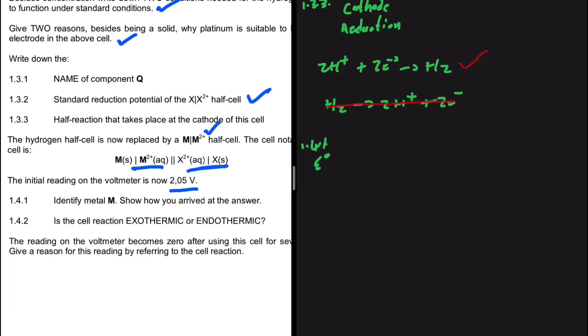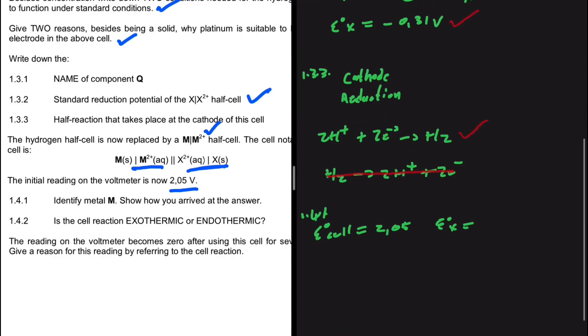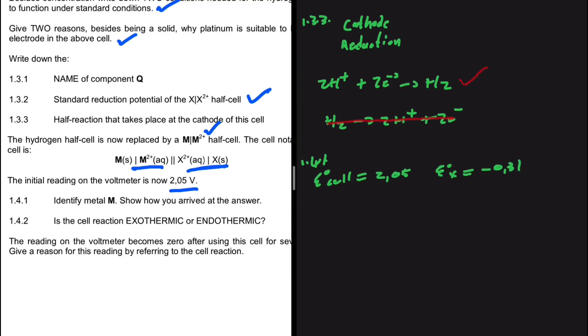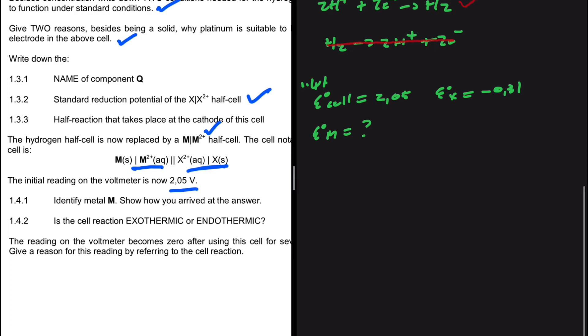What information do we have? We know that the initial EMF of the cell is 2.05. We also have the reduction potential of X. We calculated it in 1.3.2. That is minus 0.31. We're trying to identify metal M. If we find the reduction potential of metal M, then we're going to be able to go to our standard reduction potential table and see which one it is with ease. So the potential of M is what we are interested in.